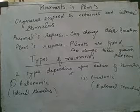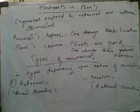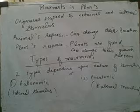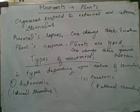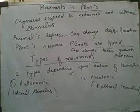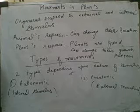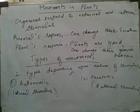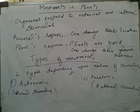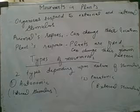Before we study the types of movement, it depends on what kind of stimulus it is — external or internal. We have divided plant movements into two categories: autonomic movements, which are due to internal stimulus, and paratonic movements, which are due to external causes.